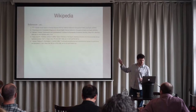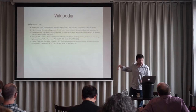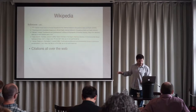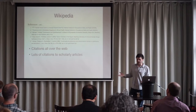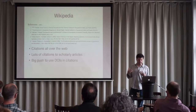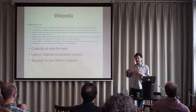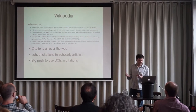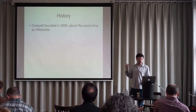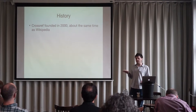This is Wikipedia — the reference section of a Wikipedia article. You can see fairly traditional citations, but also some DOIs. Wikipedia cites all over the web; there are lots of scholarly article citations, and there's a big push within Wikipedia to use DOIs for citations. Crossref knew they were being used, but we thought we'd like to find out a bit more. Crossref was founded in 2000 and Wikipedia in 2001 — they're about the same age.